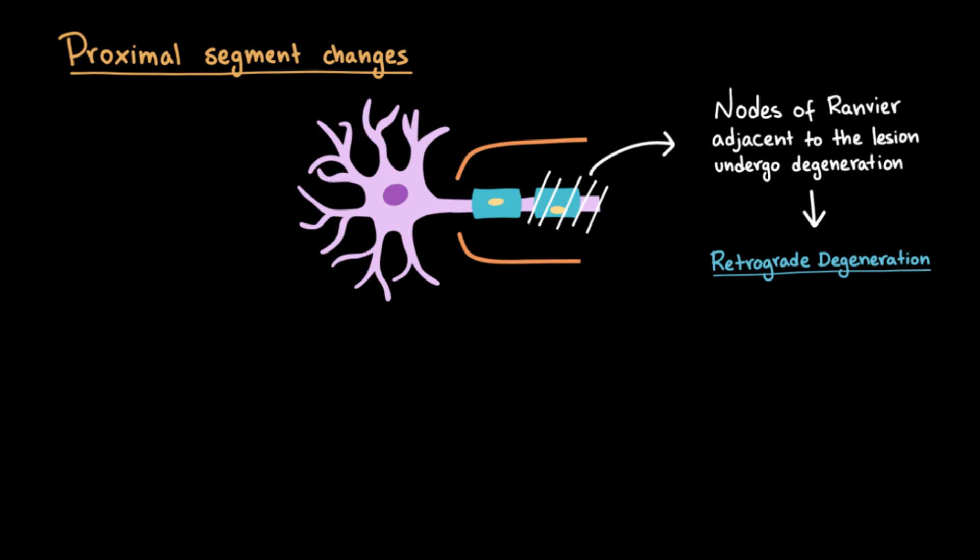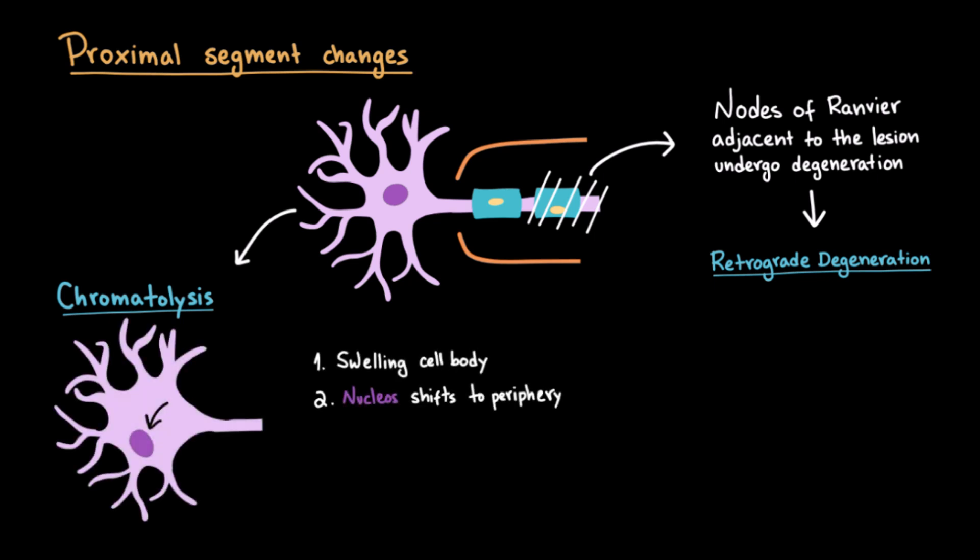Meanwhile, the cell body itself shows reactive changes in a process known as chromatolysis. During chromatolysis, the cell body swells, the nucleus shifts to the periphery, and the Nissl bodies, which are clusters of rough endoplasmic reticulum, disperse. This reflects a big increase in protein synthesis, and these proteins are transported down into the axon to support regeneration and repair. Essentially, the neuron is switching into repair mode, ramping up protein synthesis and resources in an attempt to regrow the injured axon.